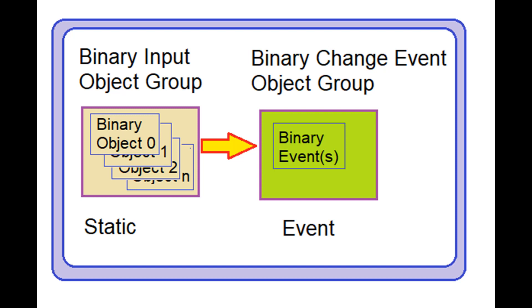There are two object groups for each input point type: static and event. A static object group contains the current value or state of each point plus its set of flags. An event object group contains a list of events declared on members of the associated static object group; each entry contains the static value as it existed when the event was declared, and may additionally include the time of occurrence. A master can ask for the current state of points by reading the static object group, or ask for events by reading the event object group, which only contains unreported events.